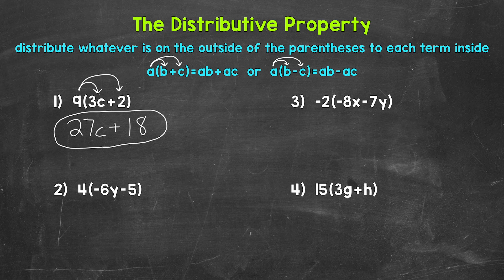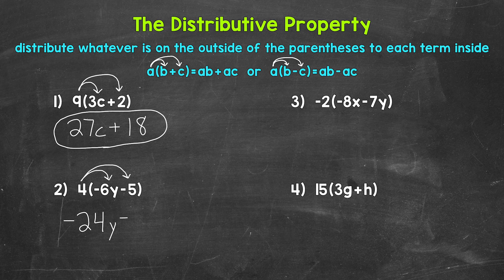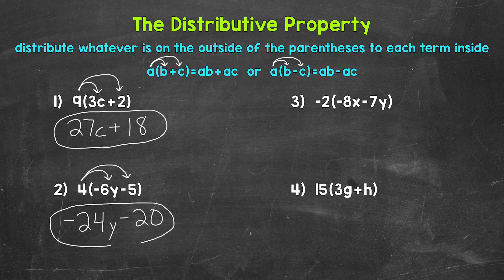Let's move on to number 2 where we have 4, and then in parentheses, negative 6y minus 5. Let's distribute that 4 to the negative 6y and to the 5. So 4 times negative 6y is negative 24y. Bring the subtraction sign down, and then we have 4 times 5, which is 20. So we end up with negative 24y minus 20. We don't have any like terms that we can combine, so this is simplified. Again, negative 24y minus 20.